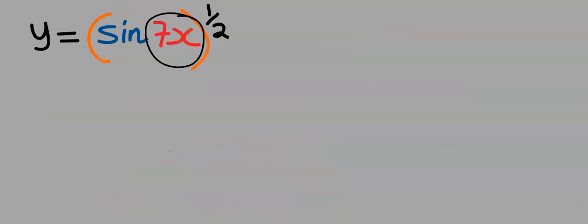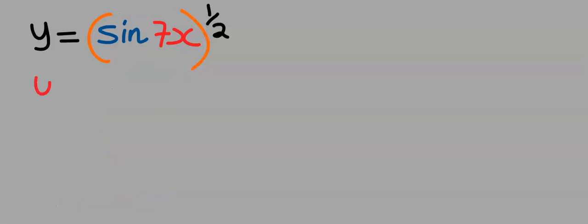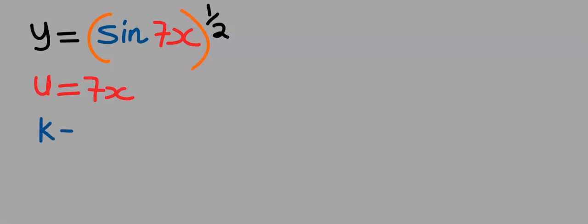Next, 7x can exist on its own, hence we call it u. Next, sin(u) can exist on its own, hence we call it k. Lastly, we can have that y is equal to k to the power of 1/2. Let k be equal to sin(u), and y will be equal to k to the power of 1/2.